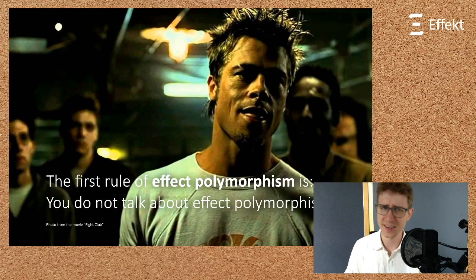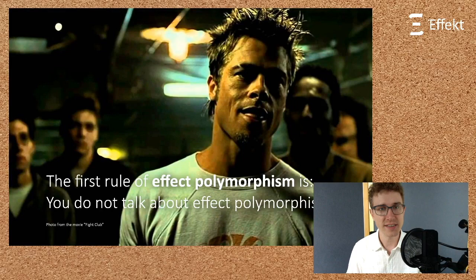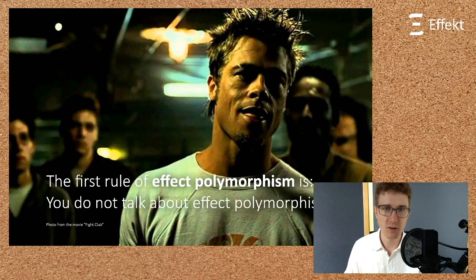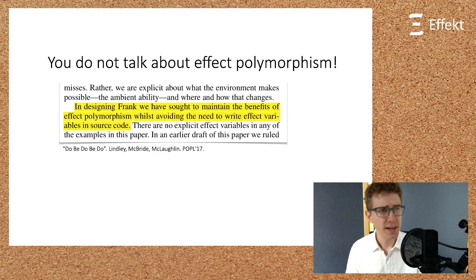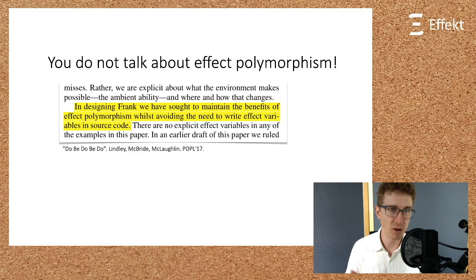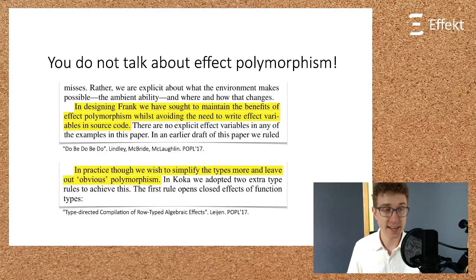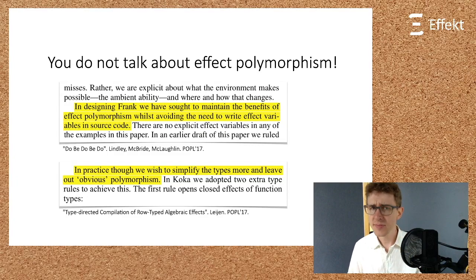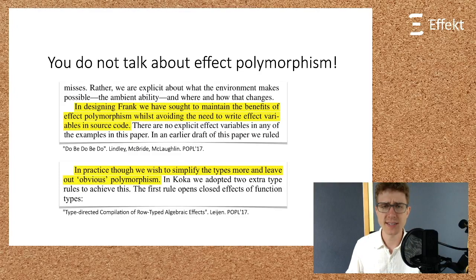And we are in good company with that opinion. Multiple researchers and language designers have stated that surfacing effect polymorphism should be avoided. For example, Lindley et al. say that in designing Frank, we have sought to maintain the benefits of effect polymorphism whilst avoiding the need to write effect variables in source code. And similarly, Leijen states that in practice though, we wish to simplify the types more and leave out obvious polymorphism. And those languages go to great lengths to hide parametric effect polymorphism from the user. However, we believe that hiding the complexity is not enough since it might still surface in error messages or more advanced use cases, potentially confusing the startled user even more.